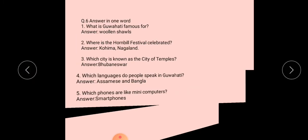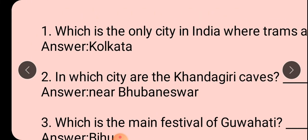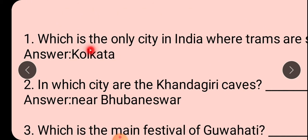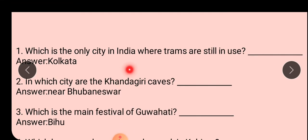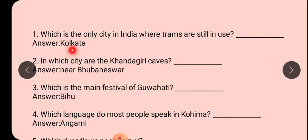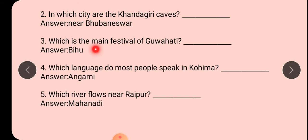Now the second set. Which is the only city in India where trams are still in use? Jahan pe tram aaj bhi chalti hai, ush city ka naam kya hai? Kolkata. In which city are the Khandagiri caves? Khandagiri cave kahan pe hai? Bhuvaneshwar. Which is the main festival of Guhati? Bihu.